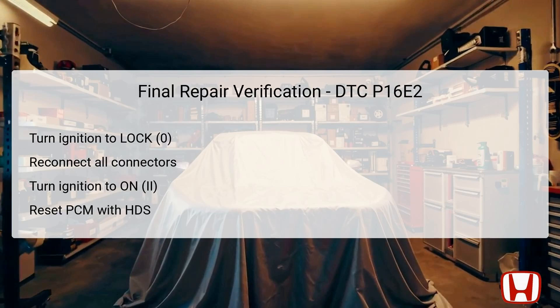Final repair verification is a crucial step to ensure all previous troubleshooting efforts yielded positive results. Start by turning the ignition switch to the lock position (0) for safety. Once assured, reconnect all connectors that were previously detached during the troubleshooting process, ensuring they are secure and free from debris or corrosion. Turn the ignition switch to the ON position to power up the vehicle's systems. After this, utilize the HDS to reset the powertrain control module (PCM), allowing it to refresh its learning parameters after repairs. Conduct a check for any pending or confirmed DTCs to confirm that DTC P16E2 is no longer active, ensuring all communication functions are restored effectively.